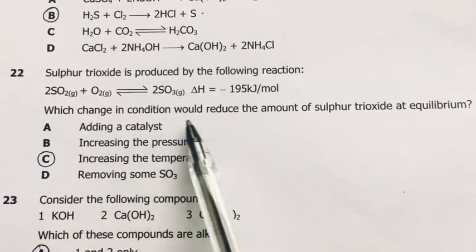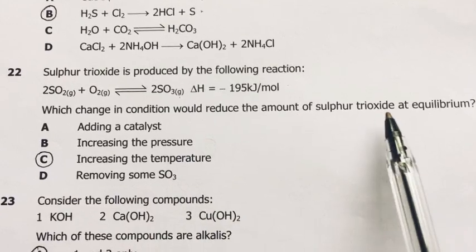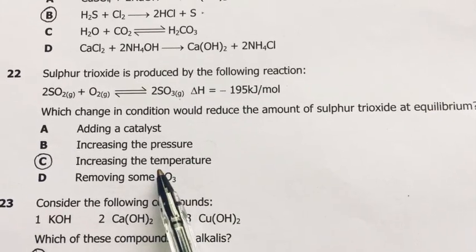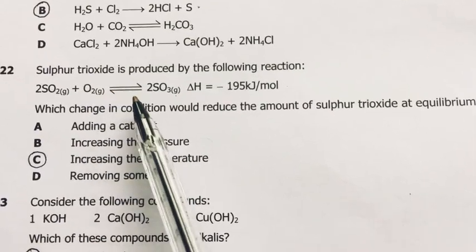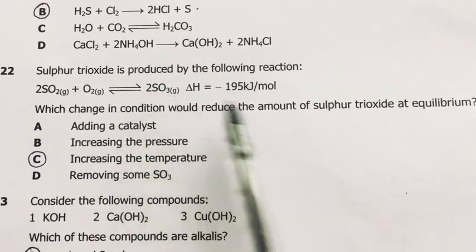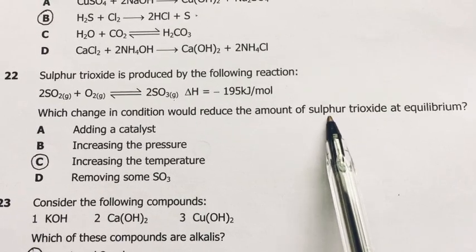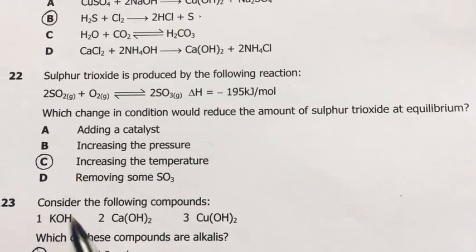So they're asking which change in condition would reduce the amount of sulfur trioxide at equilibrium? Increase in temperature. If you increase the temperature, then the forward reaction is going to slow down. And the forward reaction is the one that brings about sulfur trioxide. Our answer is C.